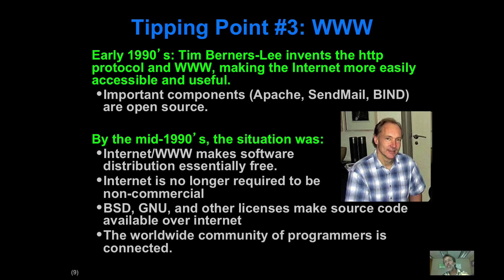But if you don't have easy ways to distribute this stuff — if you're sending around magnetic tapes, which is what people were doing in the old days — the reach and influence of it is limited. So the third part of the equation was the advent of the World Wide Web, which created a protocol for really much more easily sharing things. Before the World Wide Web, we had Gopher and FTP, but the Web made it much easier for people to distribute information.